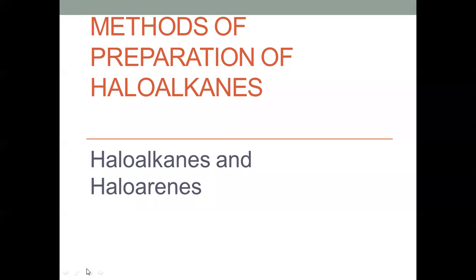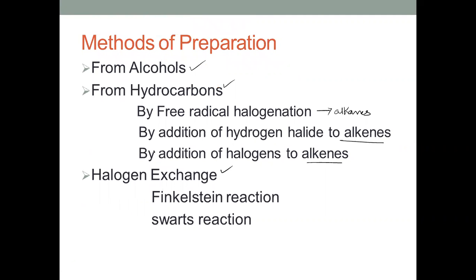Let's see the preparation of haloalkanes in this video. There are different methods of preparation of haloalkanes. Haloalkanes can be prepared from alcohols, from hydrocarbons, or by means of halogen exchange. From hydrocarbons, they can be prepared from alkanes by free radical halogenation, and from alkenes by the addition of hydrogen halides (HX) or halogens (X2) to alkenes. Let's see each one in detail.